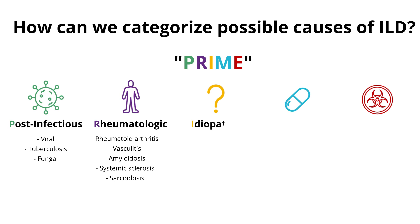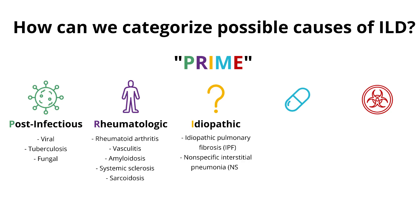Number three: idiopathic ILD. This is the diagnosis when all other potential causes have been ruled out. A few subtypes of idiopathic ILD include idiopathic pulmonary fibrosis, or IPF — this is the most common form — nonspecific interstitial pneumonia, or NSIP, and cryptogenic organizing pneumonia, or COP. We'll come back to these subtypes later.